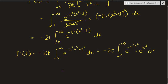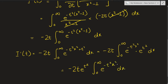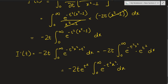Notice that e raised to t squared is a constant with respect to x, so it can also be taken outside the integral. We now have negative 2t times e raised to t squared times the integral from 0 to infinity of e raised to negative t squared times x squared, dx.